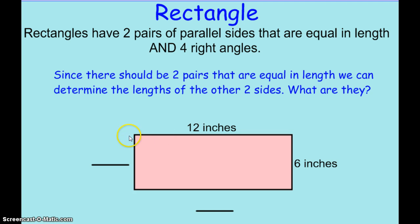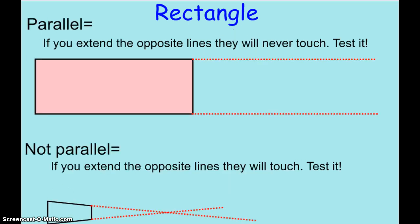Parallel means that 2 lines are running in the same direction and they will not cross over each other. So the top and bottom are parallel and the left and right are also parallel. So let's look at what that means. If you extend these lines, they will not cross.